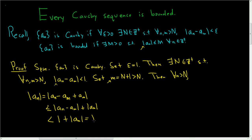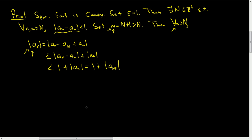To emphasize that it's fixed, this is a_{N+1}. So we've found an upper bound on the absolute value of a_n when little n is bigger than capital N. We needed to fix something so that we could bound this using the Cauchy condition. So the absolute value of a_n is less than 1 plus the absolute value of a_{N+1}, and this is true for all little n bigger than capital N.